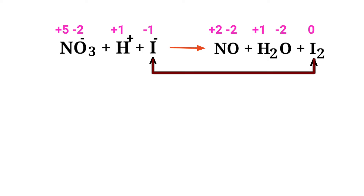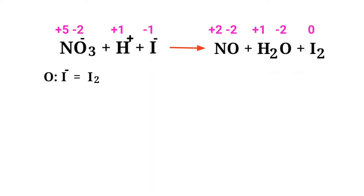In this equation, iodine has a charge of minus one and is changing to zero, so iodine is being oxidized. Nitrogen has a charge of plus five and is changing to plus two, so nitrogen is being reduced.